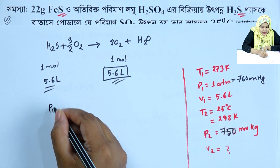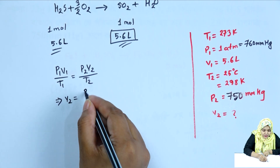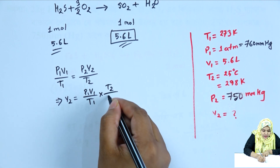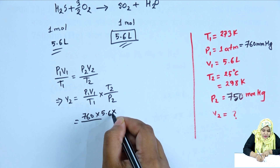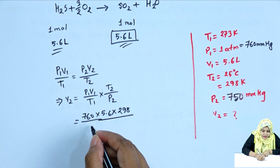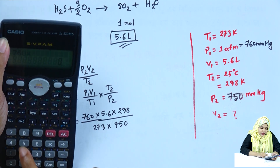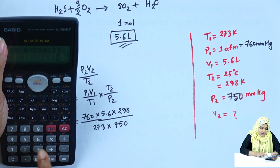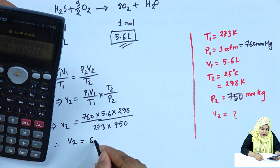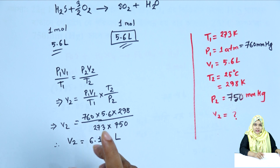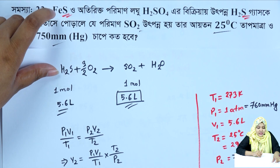Using the combined gas law: P1·V1/T1 = P2·V2/T2, so V2 = P1·V1/T1 × T2/P2. P1 = 760 mm, V1 = 5.6, T2 = 298, T1 = 273, P2 = 750. So 760 × 5.6 × 298 / (273 × 750) gives V2 equal to 6.194 litres.